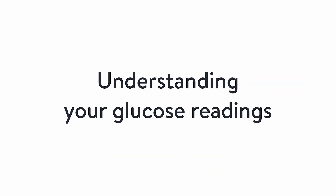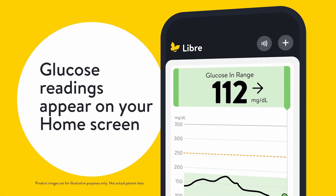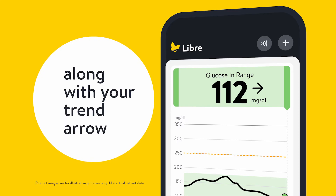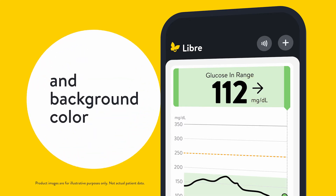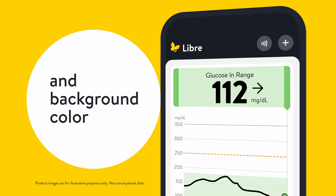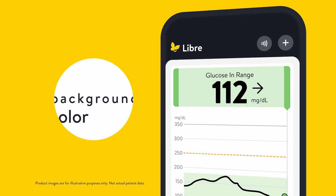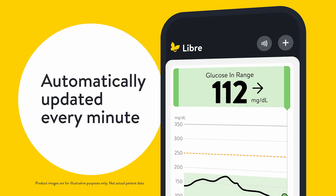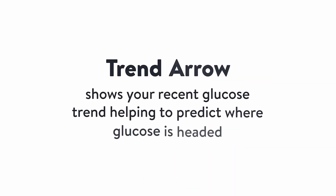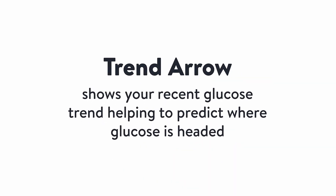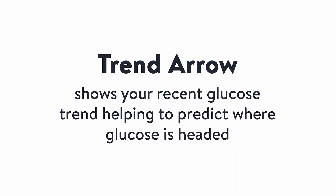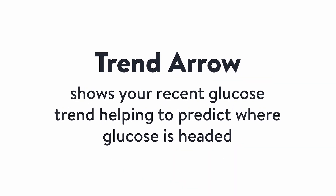Now we'll dive into understanding your glucose readings. Glucose readings appear here along with your trend arrow and background color, and are automatically updated every minute. Your trend arrow shows your recent glucose trend, helping to predict where glucose is headed.